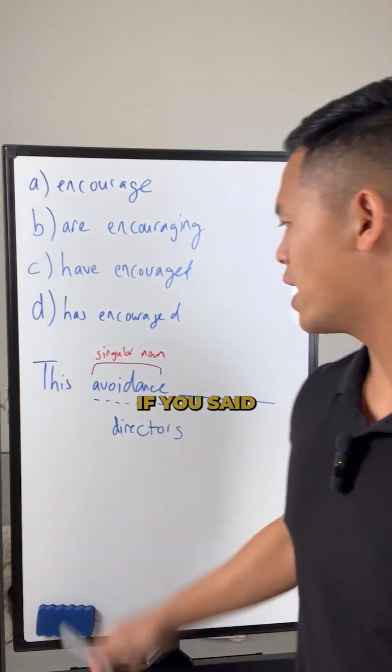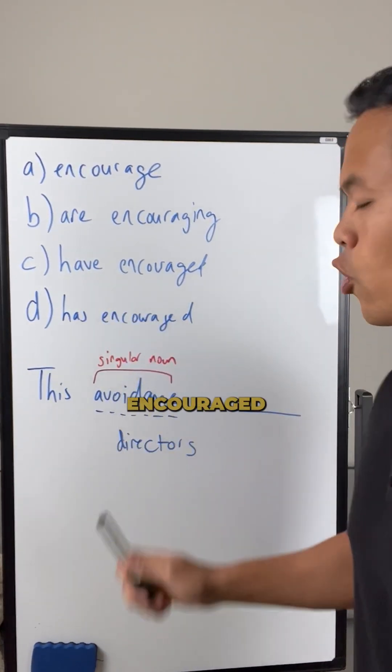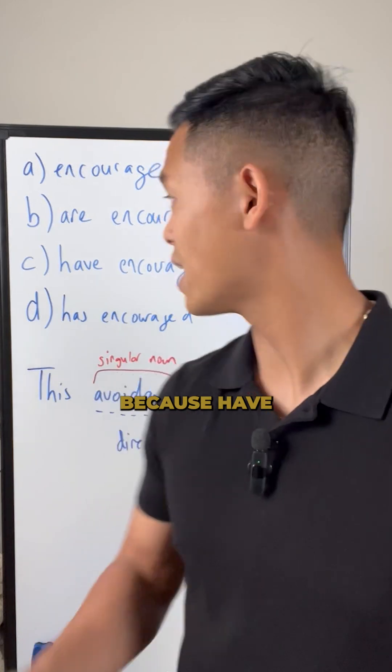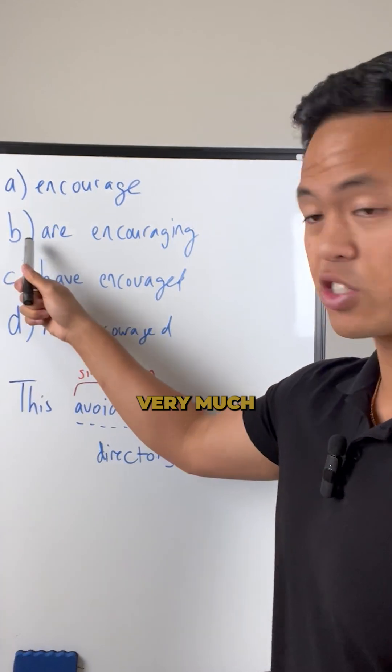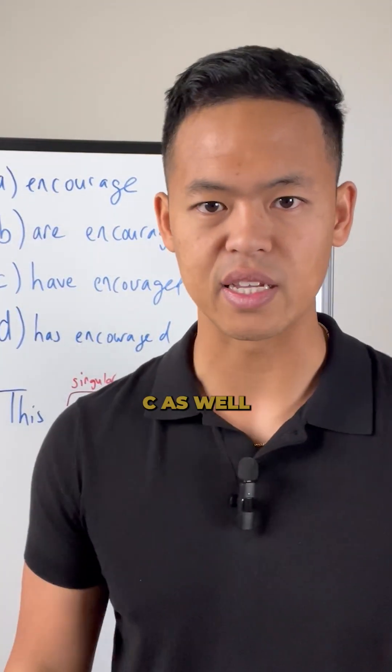What about C? If you said this avoidance have encouraged, that just doesn't really make any sense because 'have' is for multiple things. You only have one avoidance. This is very much the same as B, so we don't need C as well.